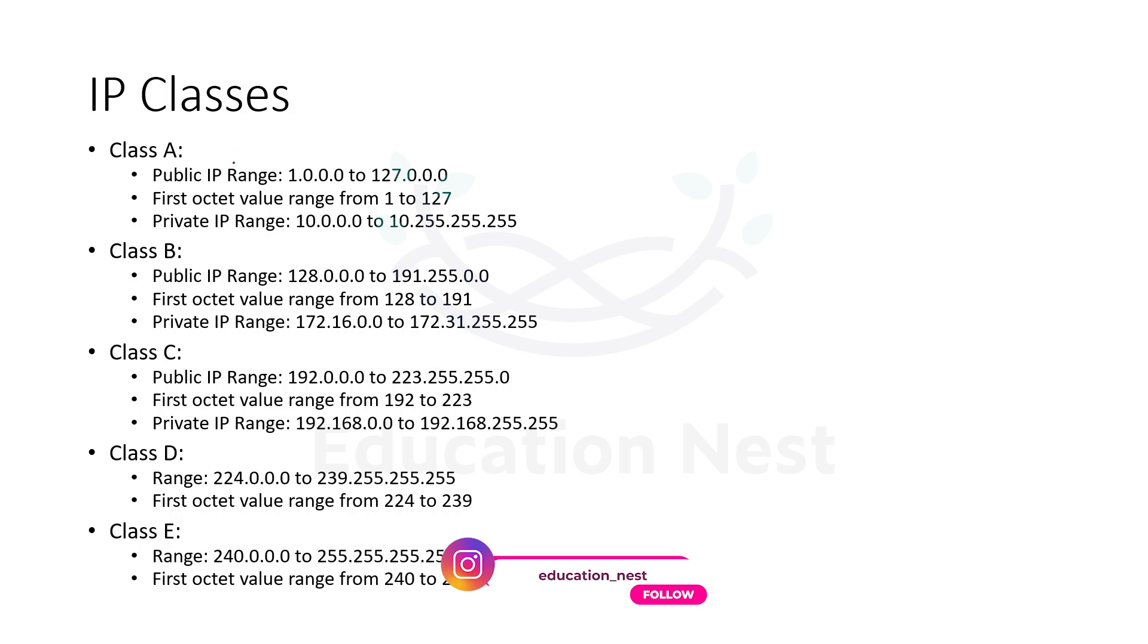So over here, you can see that class A IP address, the public IP address range starts from 1.0.0.0 to 127.0.0.0. Over here, the first octet, only the first octet represents the network part. And the next three octets represent the host part. So first octet for network and three octets for host. So here we can have very large networks means we can have so many hosts inside of one particular network in class A. So when you want to create very large networks with the higher number of hosts, then you can go with your class A IP address.